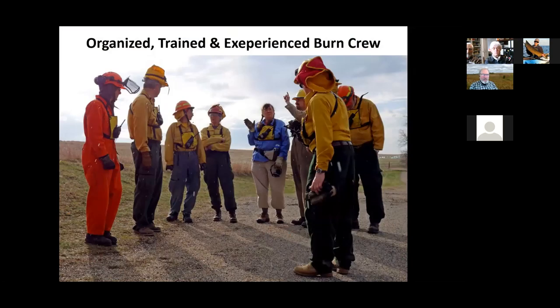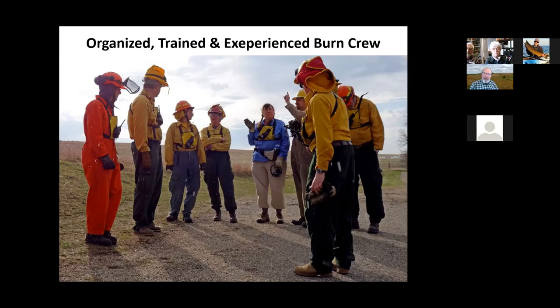The other really important element is an organized, trained, and experienced burn crew. With the Prairie Enthusiasts we have three levels of command and control: line crew members, a line boss for each of the two crews, and an overall burn boss. Everybody on a burn communicates by radio — that's a really important piece of equipment — and there's a lot of training at each level and a lot of organization and planning so everybody knows what their role is going to be.